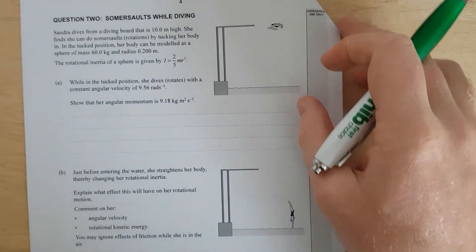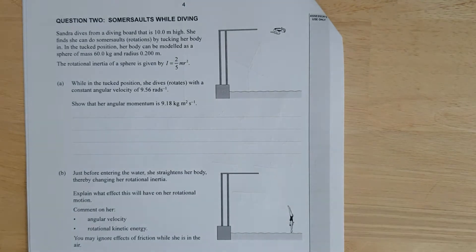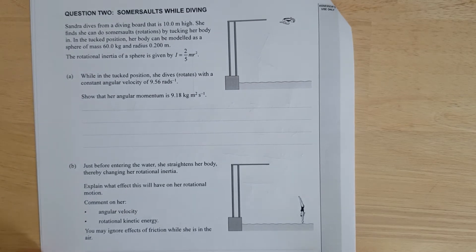This is question two of the 2020 Mechanics exam. Sandra dives from a diving board that is 10 metres high. She finds that she can do somersaults by tucking her body in. In the tuck position, her radius can be modelled as a sphere of mass 60 kilograms and radius of 0.2 metres. Rotational inertia is given by 2/5 MR squared. While in tuck position, she rotates with a constant angular velocity of 9.56 radians per second. Show that her angular momentum is that.